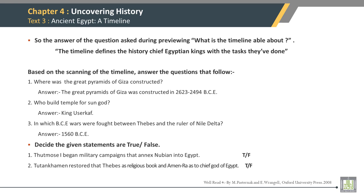Based on the scanning of the chart, answer the questions that follow. Where were the Great Pyramids of Giza constructed? The Great Pyramids of Giza were constructed in 2623 to 2494 BCE. Who built the temple for the sun god? The answer is King Yuzar Khaal. In which BCE were wars fought between Thebes and the ruler of Nile Dutta? The answer is 1560 BCE.